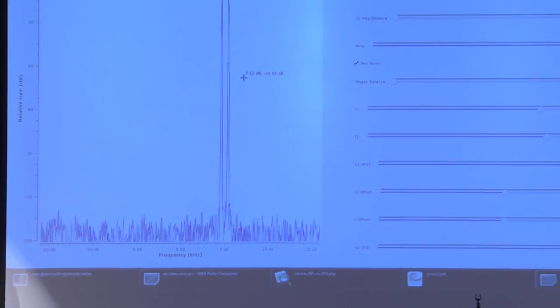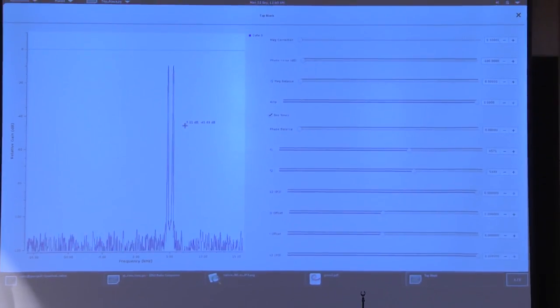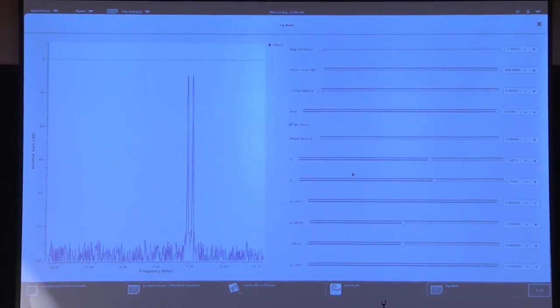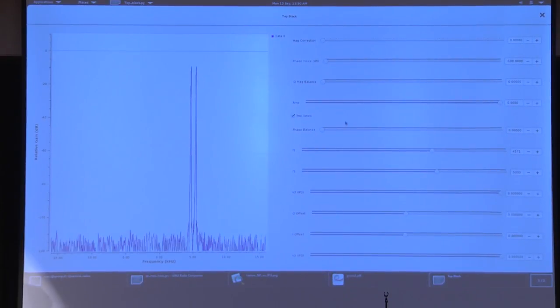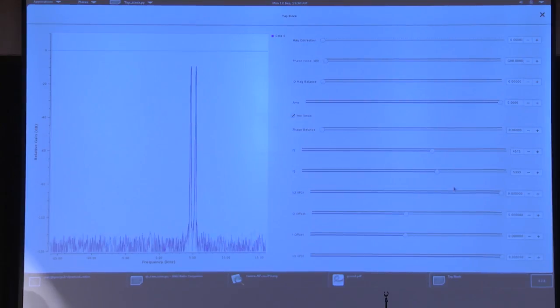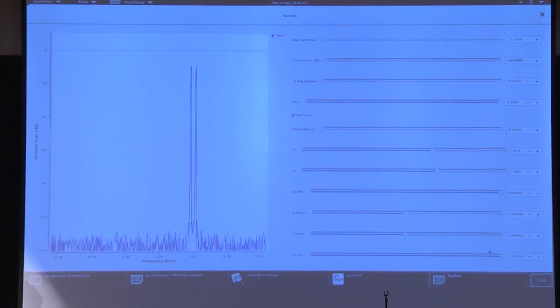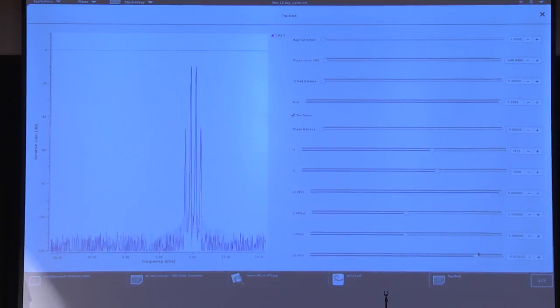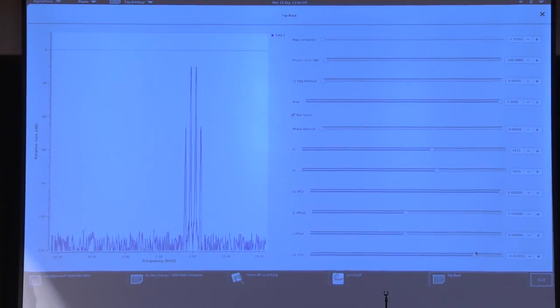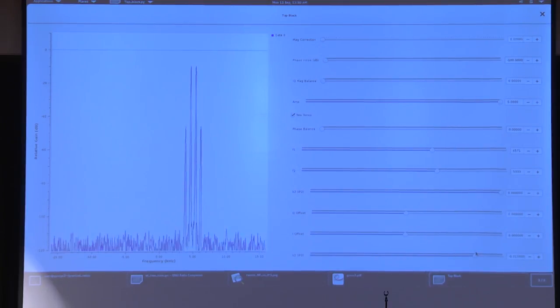So right now there's effectively perfect IP3. We've got two signals. And as we turn, change the IP3 factor from zero and we increase it, you can see it creates these sum and difference products. Now it also creates third harmonic stuff that's off the screen. Typically you don't care about those. You care about these because they fall in band.